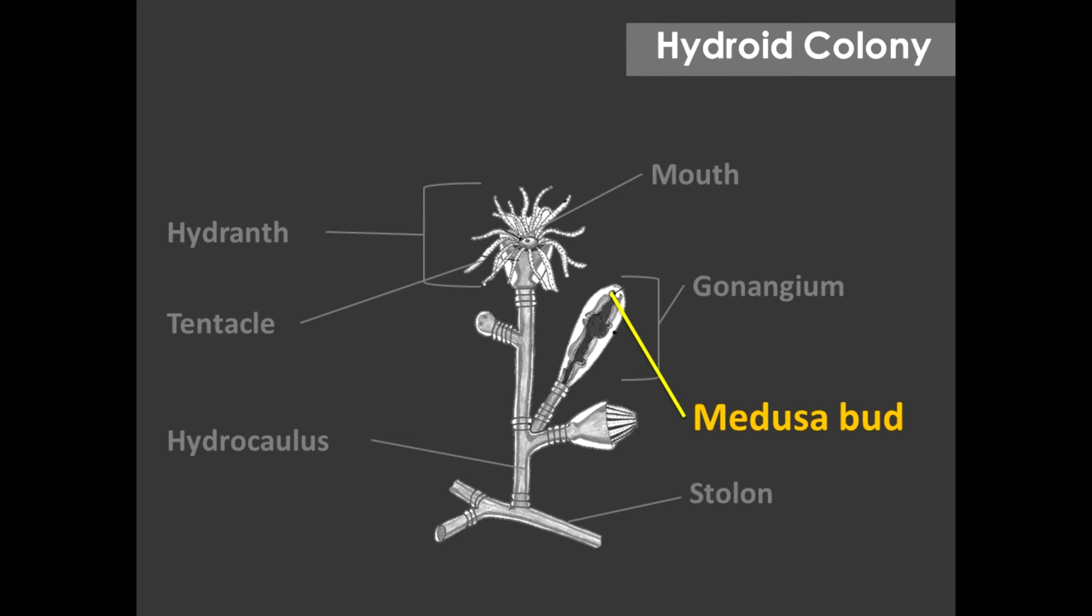When they are fully formed, they are set free and swim away from the colony by escaping through the ruptured distal end.